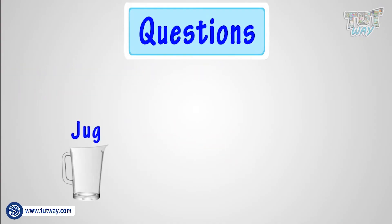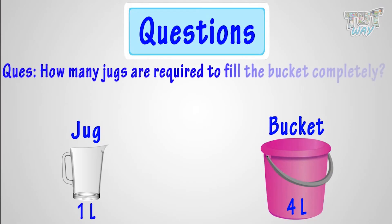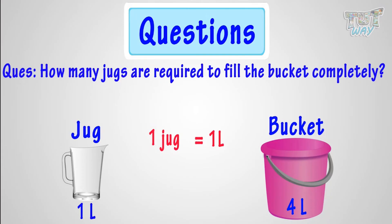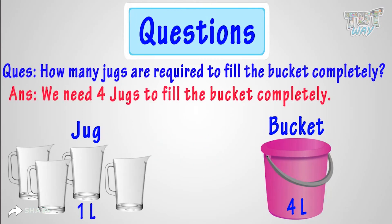Here we have a jug whose capacity is 1 liter, and we also have a bucket whose capacity is 4 liters. Then, how many jugs are required to fill the bucket completely? One jug will contain 1 liter of water. So, 4 jugs will make 4 liters of water. So, we need 4 jugs of water to completely fill the bucket.